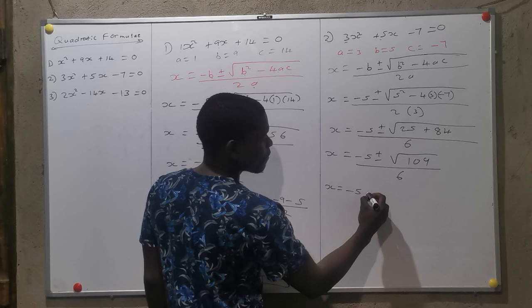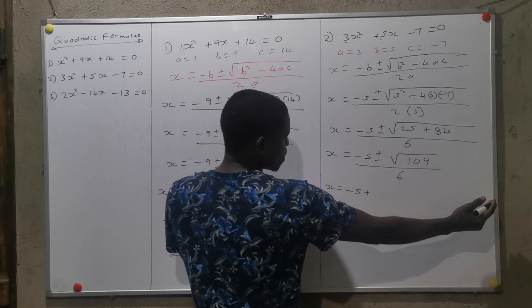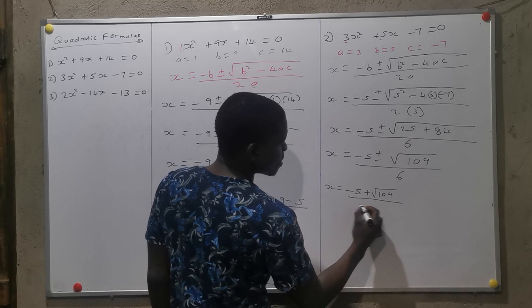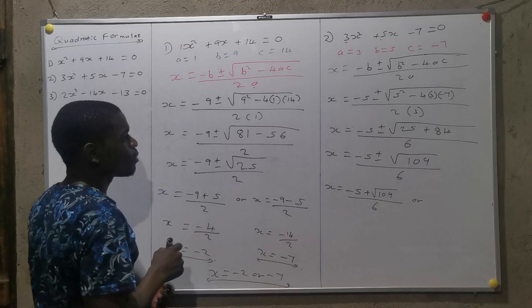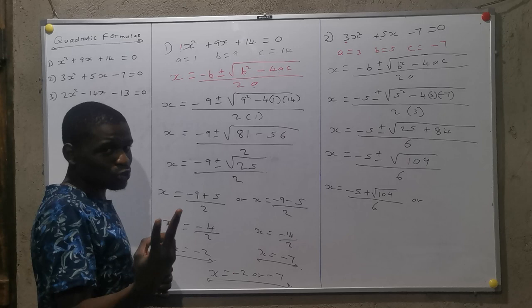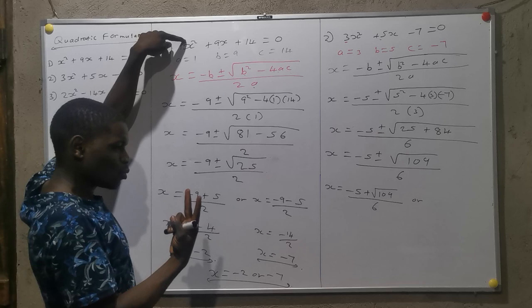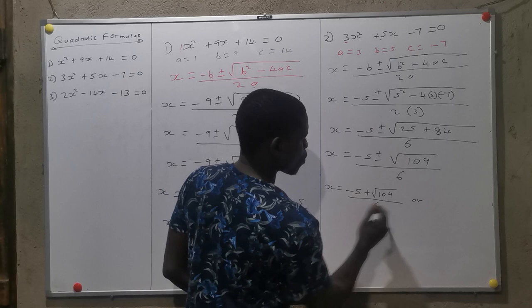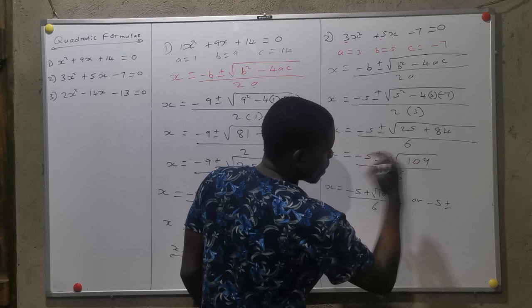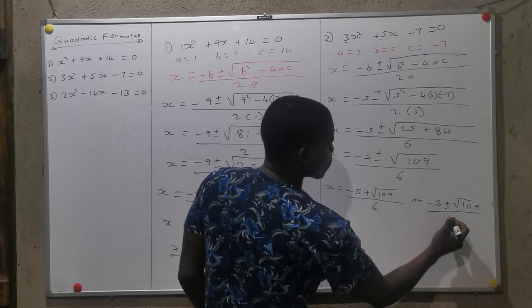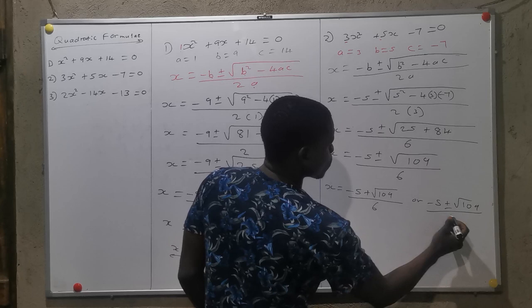At this stage, I'm going to divide into two equations. X equals minus 5 plus - remember, we've got two sides, it's plus or minus - so plus the square root of 109 divided by 6. And the other one: X equals minus 5 minus the square root of 109 over 6.